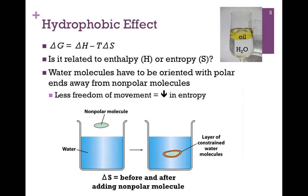If we consider this figure from your book and imagine taking a single non-polar molecule and adding it to water, we find the water molecules become very constrained in the layer directly around that non-polar molecule. This represents a decrease in entropy — that is, the delta S before and after adding that non-polar molecule is negative.